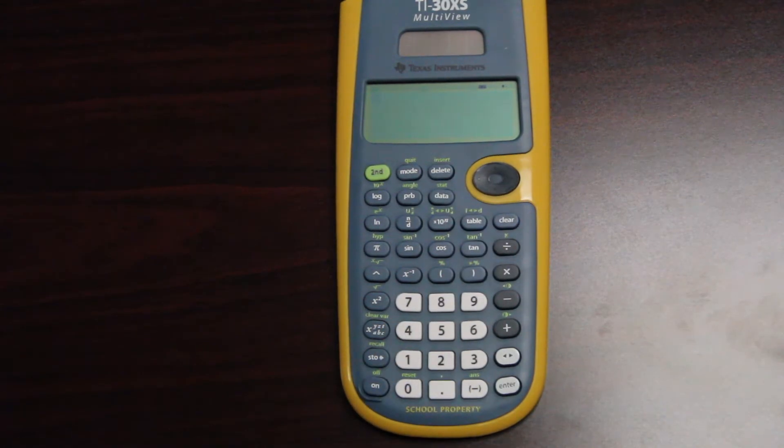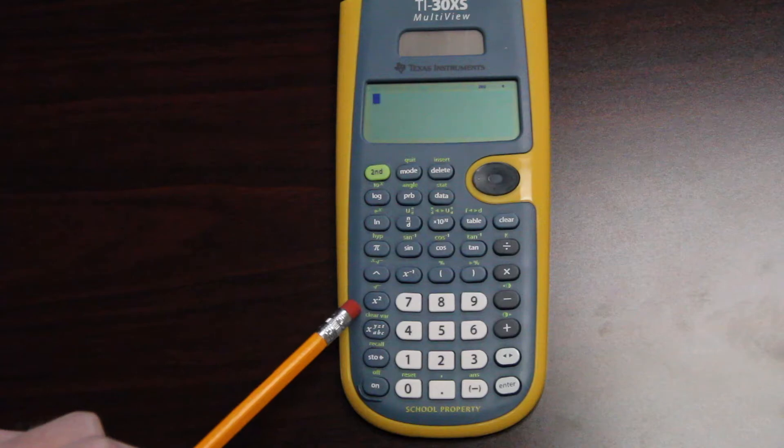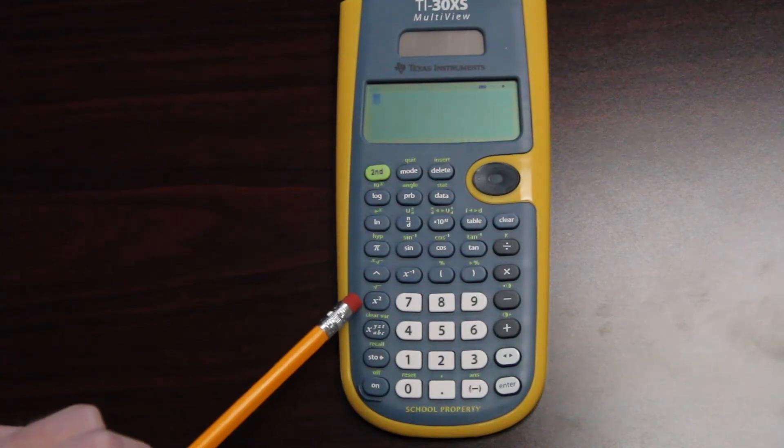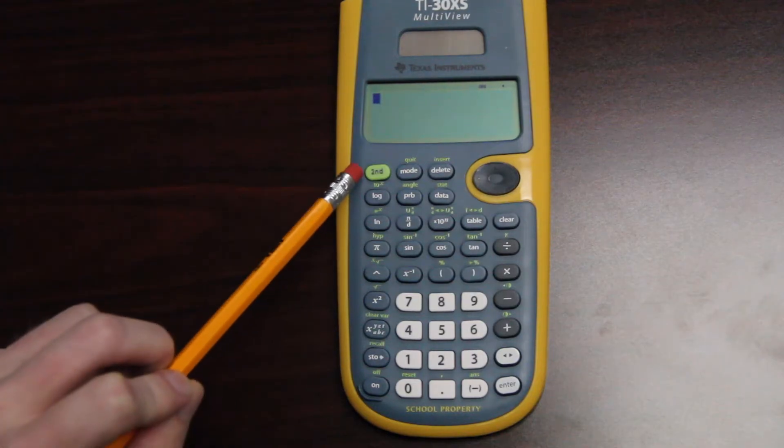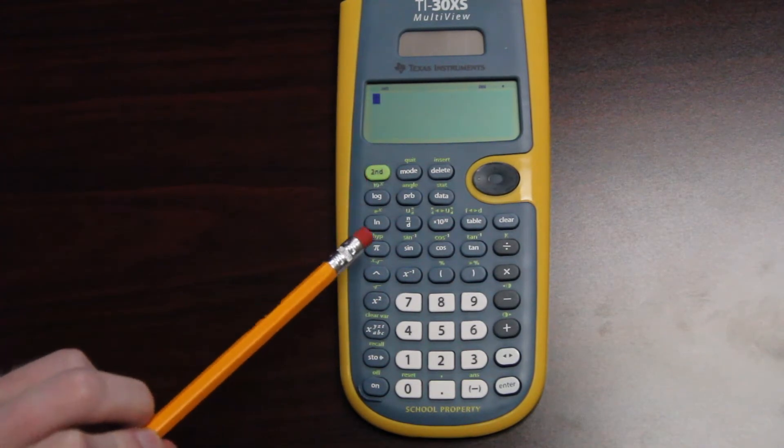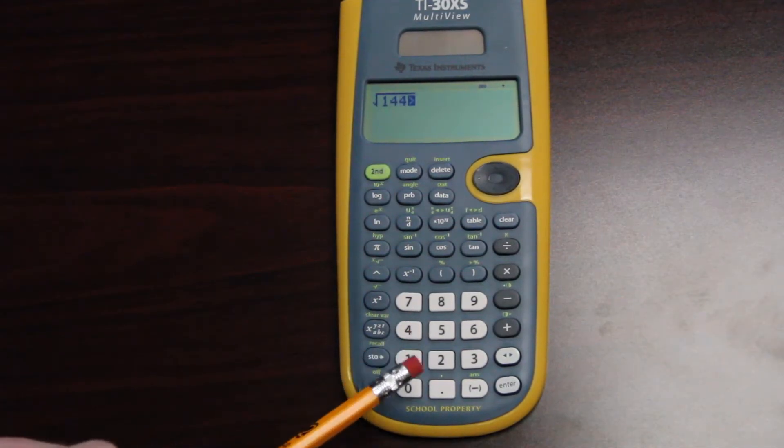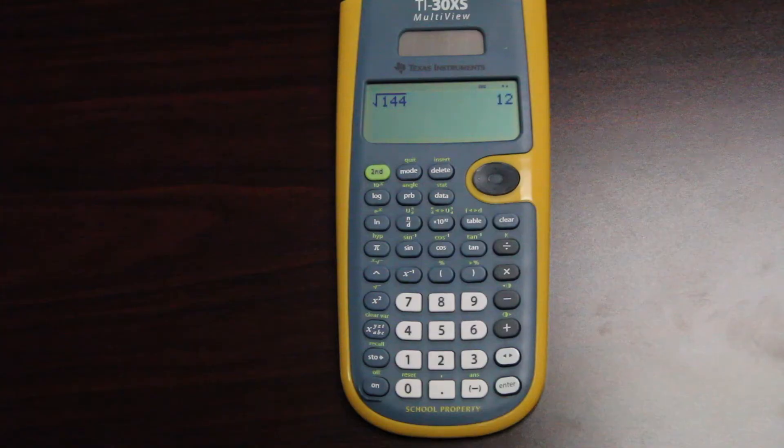Another thing I can do is I can take the square root of a number. You can find the square root key in green above the x squared button. Whenever the stuff is in green, you want to make sure you push the second key first. That'll get you all the green info. So I push second, square root, and I type in the number I want to take the square root of, like 144. I hit enter.